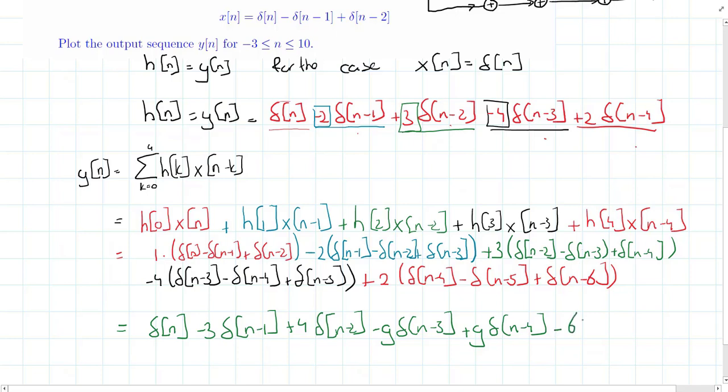The final collected terms include -6δ[n-5] + 2δ[n-6].